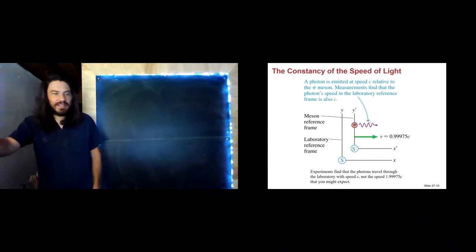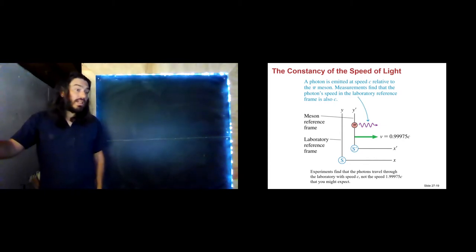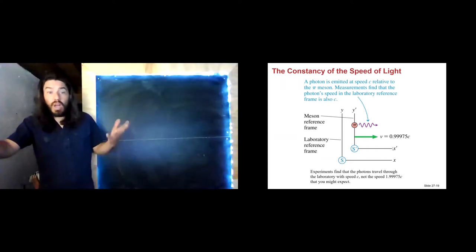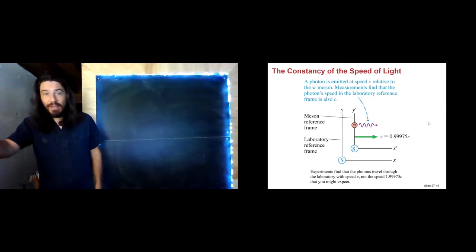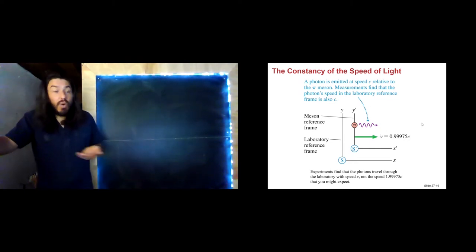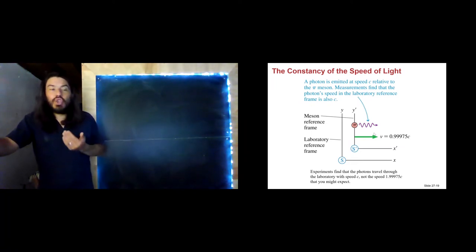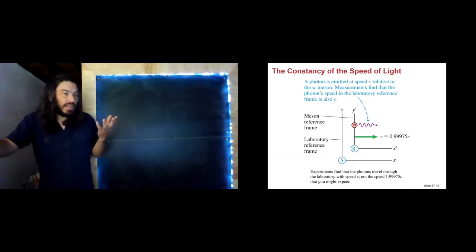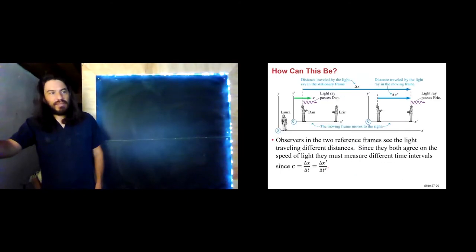if Galilean relativity was the way the world worked, then in the laboratory I should measure 1.999975C for the speed of that photon. But we don't — we measure it at C. It should be going almost twice the speed of light if Galilean relativity was true, but it isn't. It's just going the speed of light according to both the meson and the experimenter in the laboratory reference frame.